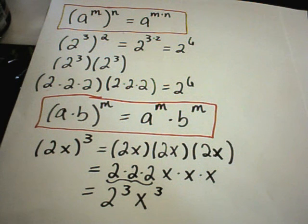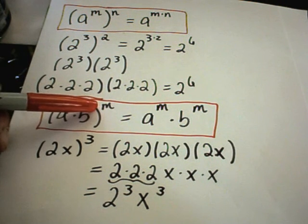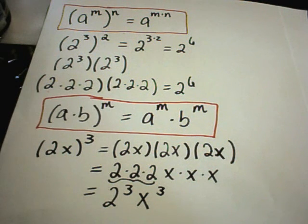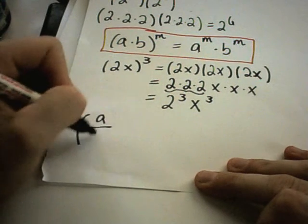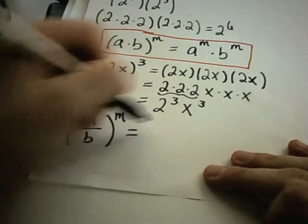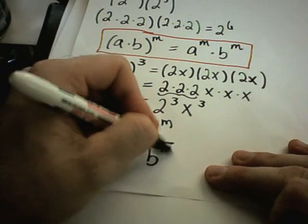These rules hold regardless of whether we're using positive or negative exponents — whatever the power is, these properties are true. The last rule is a variation: if you have a divided by b raised to the m power, you get a raised to the m power over b raised to the m power.